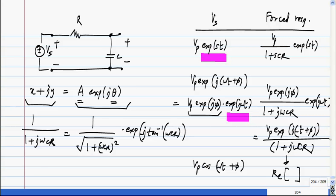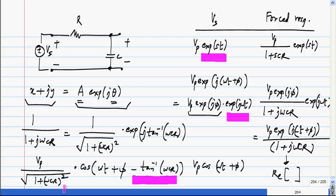So finally, the response to this turns out to be Vp / √(1 + (ωCR)²) cos(ωt + φ - tan^(-1)(ωCR)). So you apply a sinusoid to a linear system, what you get out is a sinusoid of exactly the same frequency. The amplitude will be changed and the phase will be changed. How much the amplitude will be changed and how much the phase will be changed depend on the circuit. So this is the amount of phase change, right? And this is the factor by which the amplitude is changed.